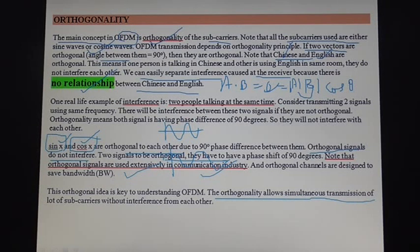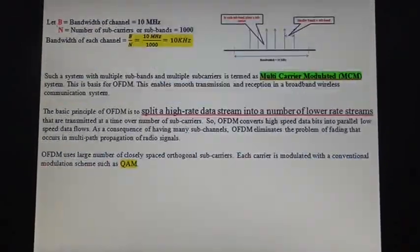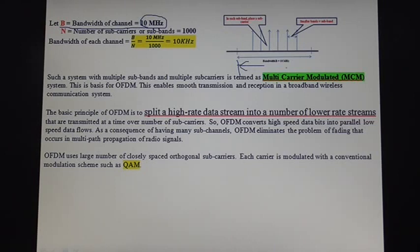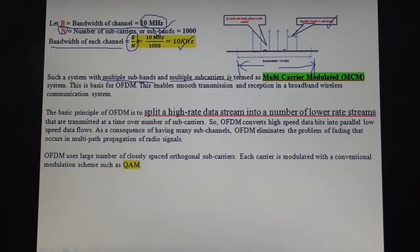Orthogonality allows simultaneous transmission of many sub-carriers without interference from each other. Suppose a communication channel has a bandwidth of 10 MHz. This 10 MHz bandwidth is subdivided into N sub-channels, or sub-bands. The bandwidth of each sub-channel will be B/N, giving 10 kHz per sub-channel. A system with multiple sub-bands and multiple sub-carriers is termed MCM — Multi-Carrier Modulated system.